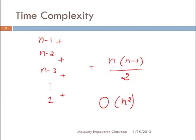Actually, the time complexity of selection sort is Theta(n squared), because it always takes the same number of steps no matter what the order of the given input elements is. So in the best case, worst case, and average case, it always takes time n squared. We say selection sort is Theta(n squared) — that is the time complexity of selection sort.